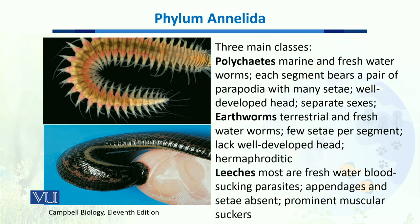The first class is Polychaeta. These are marine and freshwater worms, and each segment bears a pair of parapodia. As you can see here, these parapodia have many setae — hair-like structures — present on each segment.